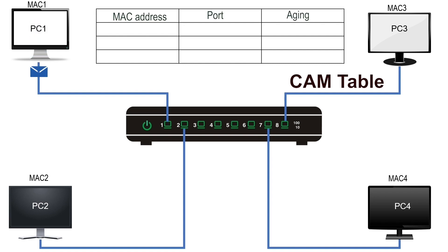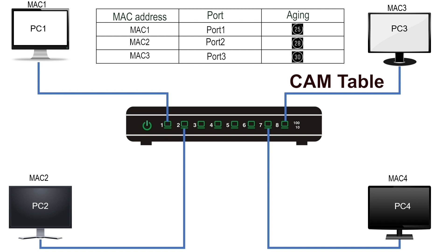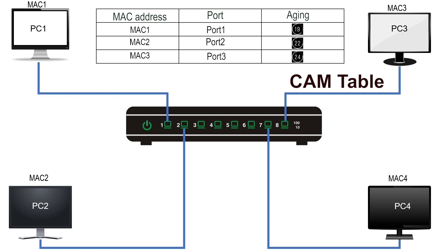In the MAC address field, it saves the MAC address from the source field of the frame. In the port field, it saves the port information on which the switch received the frame. In the aging field, it saves a timer. It assigns a separate timer to each entry of the CAM table. This timer is used to age out old entries from the CAM table, allowing room to store new entries. This feature is known as aging.